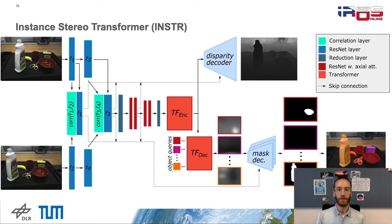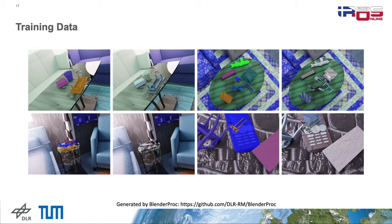The network was trained with 40,000 synthetic images generated by BlenderProc, a pipeline building on Blender for photorealistic training image generation. The link can be found below. In each sample, we placed 5 to 12 ShapeNet objects on different surfaces of the SunCG dataset.